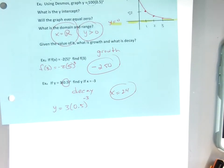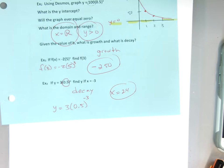So that seems strange — we said it was decay, meaning it gets smaller, but we get 24 for a negative input. Think about it: negative x means we're looking back at history. The graph goes 24, 12, 6, 3 as we move forward. At x equals negative 3, we're looking at what the value was before we started halving it.